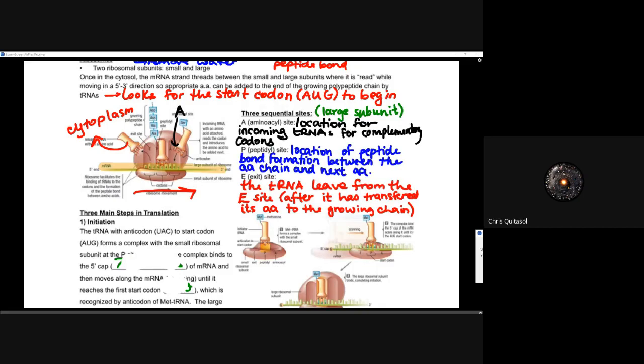There are three sequential sites in the ribosome. The A site — the aminoacyl site — is the location for the incoming tRNA with the complementary codon, where it recognizes and attaches to the messenger RNA. The P site — the peptidyl site — is where peptide bond formation happens between the amino acid chain and the next amino acid brought in. The E site — the exit site — is where the tRNA leaves after transferring its amino acid to the growing chain.